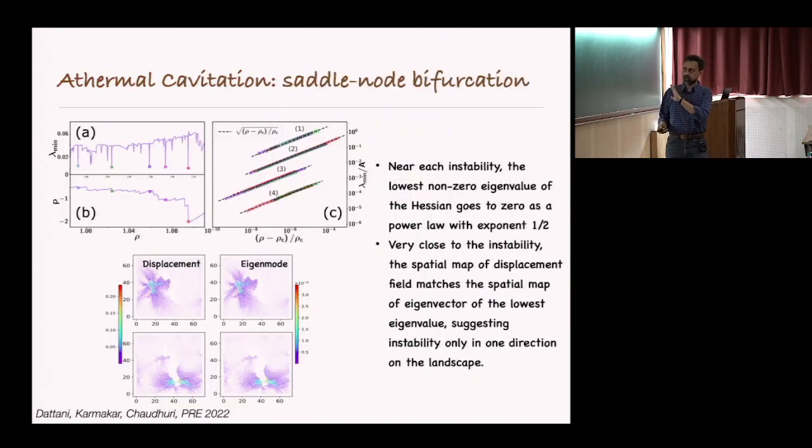We have done quite extensive characterization. Since we are surfing on the potential energy landscape, you can study the properties of the Hessian. For example, look at the lowest non-zero eigenvalue. This goes to zero several times. These are all plastic events that are happening. At these plastic events, one sees square root singularities, which are well known in other mechanical deformation contexts.